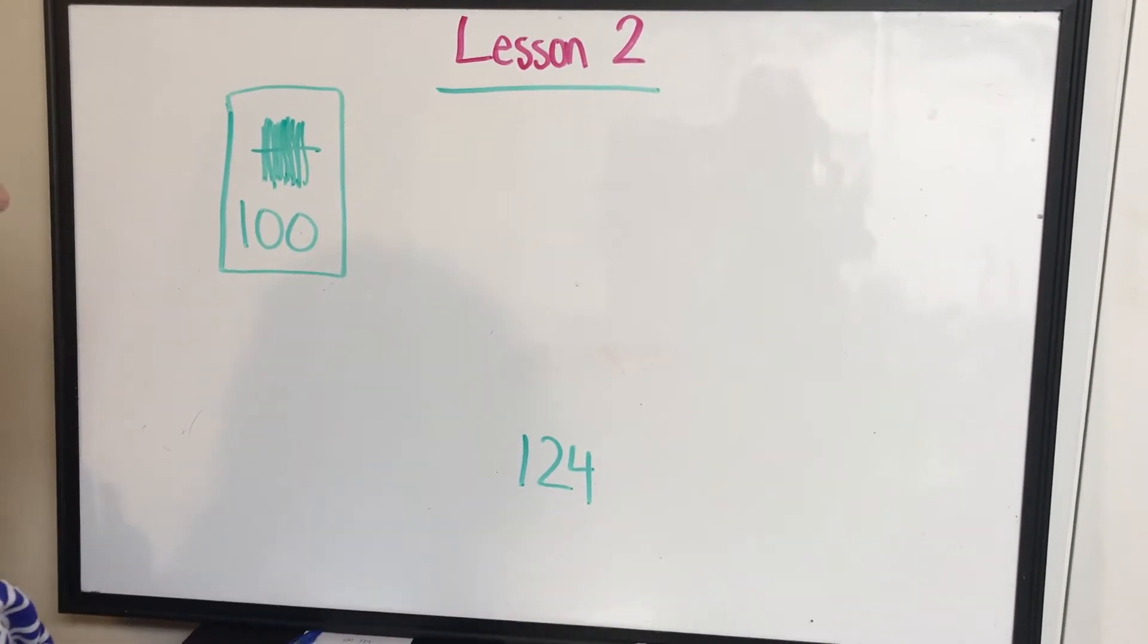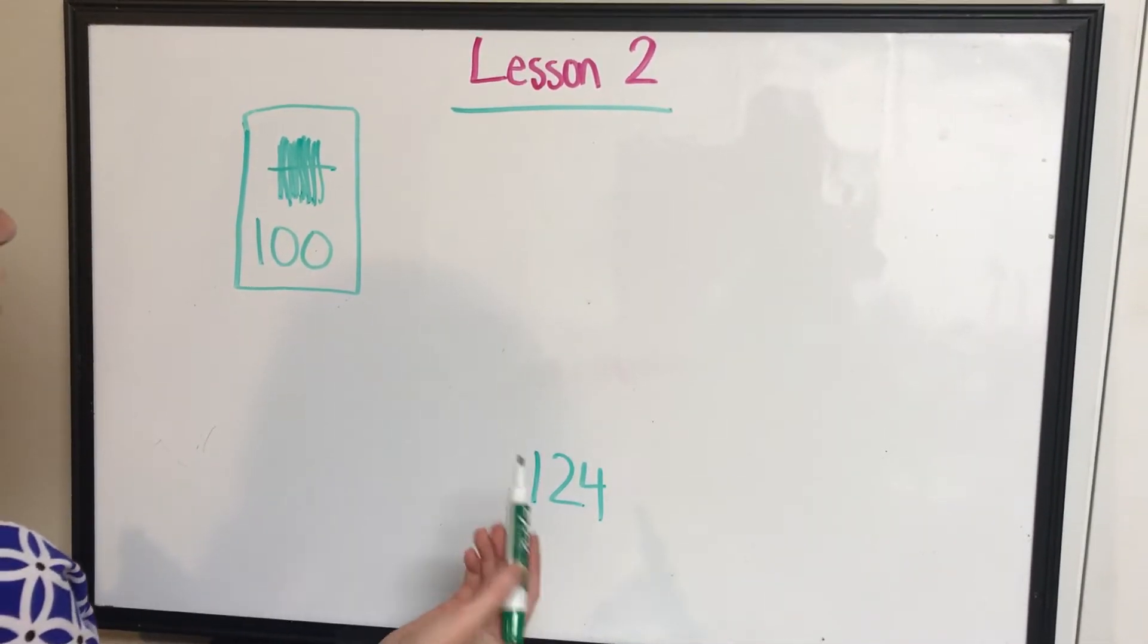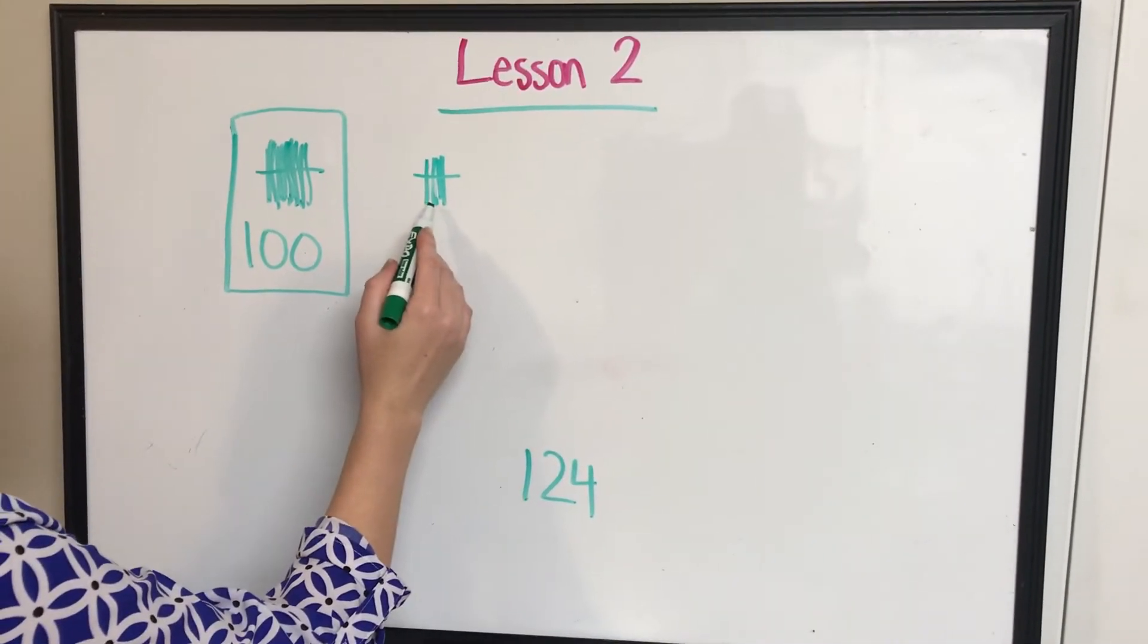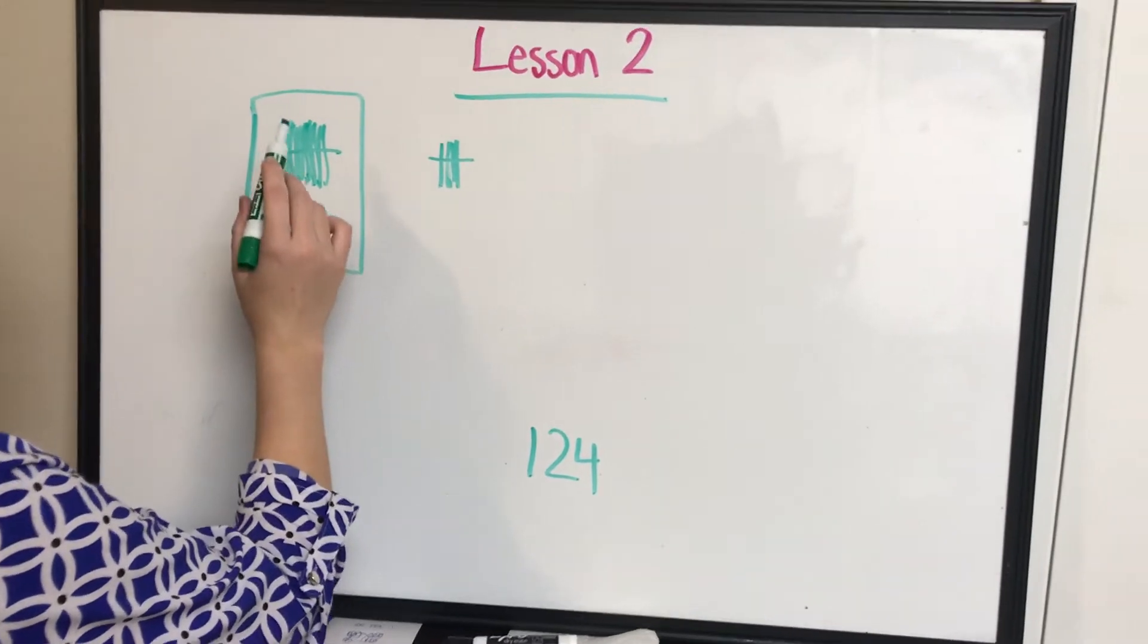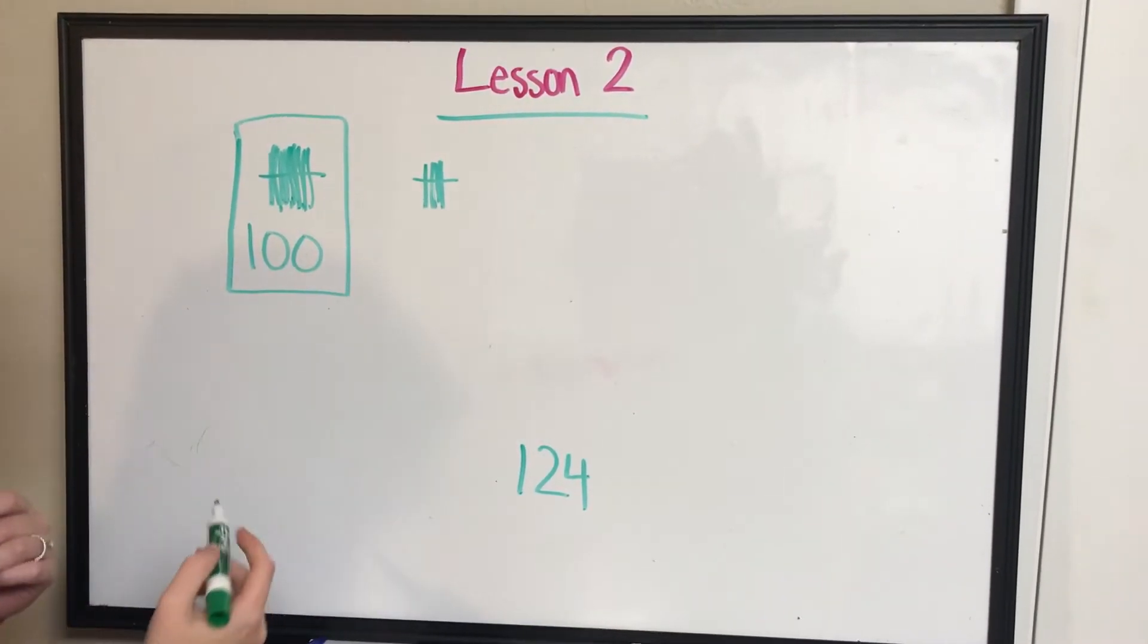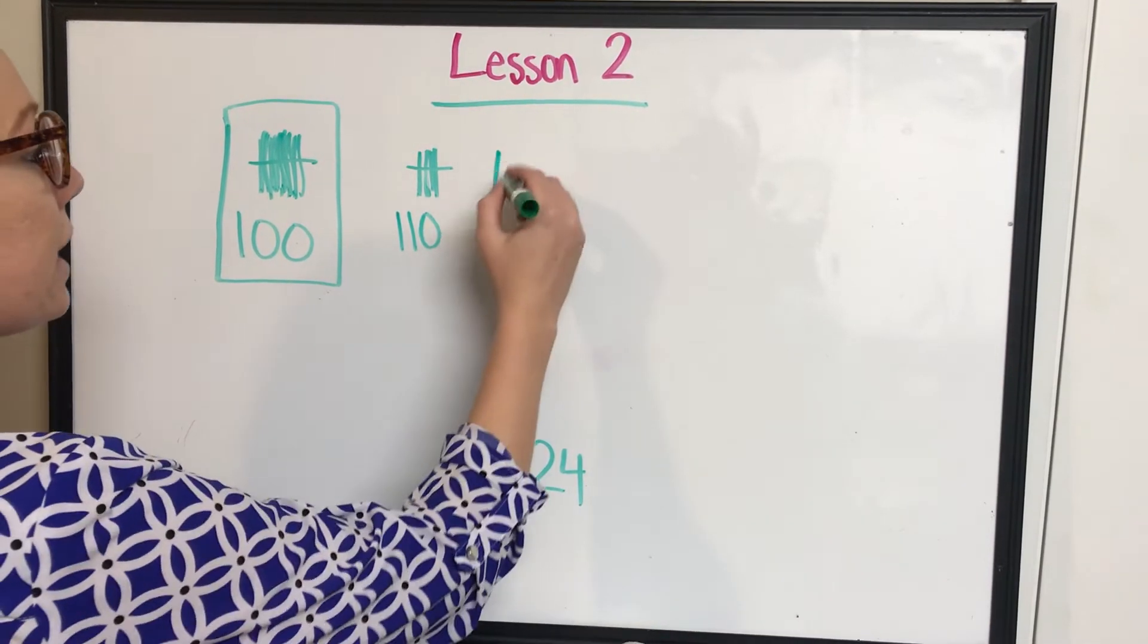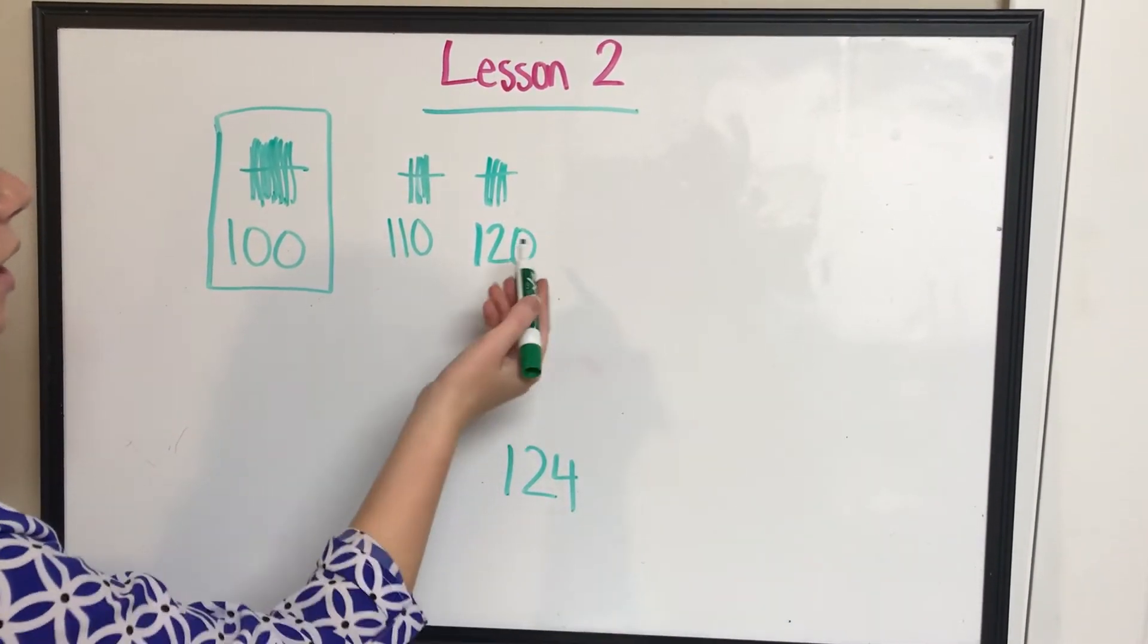Now they think, can I add a tens block? Yeah, you could, because 100 plus 10 would be 110. So they're going to go ahead and draw their tens block. Your student's tens block should be smaller than their 100. So the 100 looks bigger and the 10 is smaller. You also need to label it. That's going to be 110. I need to add another tens block, making that 120. I'm now at 120.